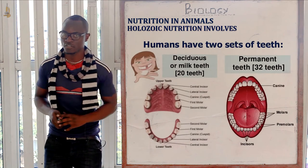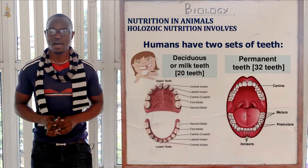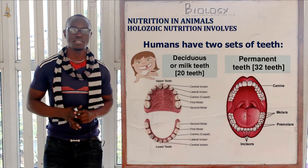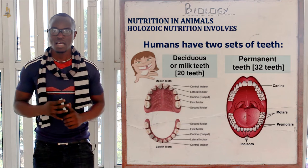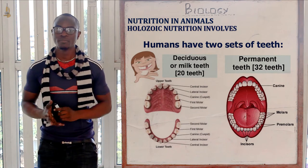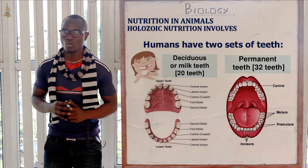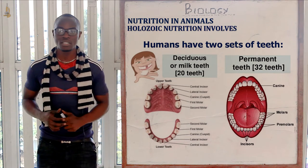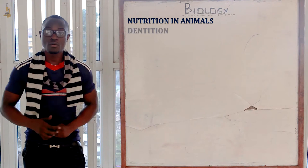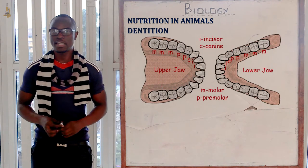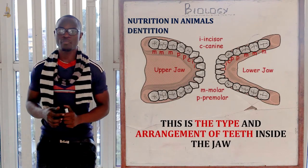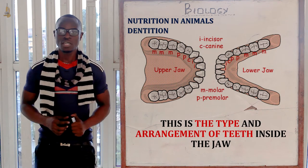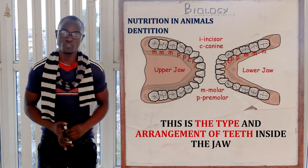In human beings, we have two sets of teeth. The first set is the milk teeth, which are mainly evident when a newborn is at the infant stage. After the milk teeth, we have the permanent teeth, which take the organism through to old age. Dentition is the type of teeth and their arrangement, and each dentition is unique to the organism's mode of feeding.